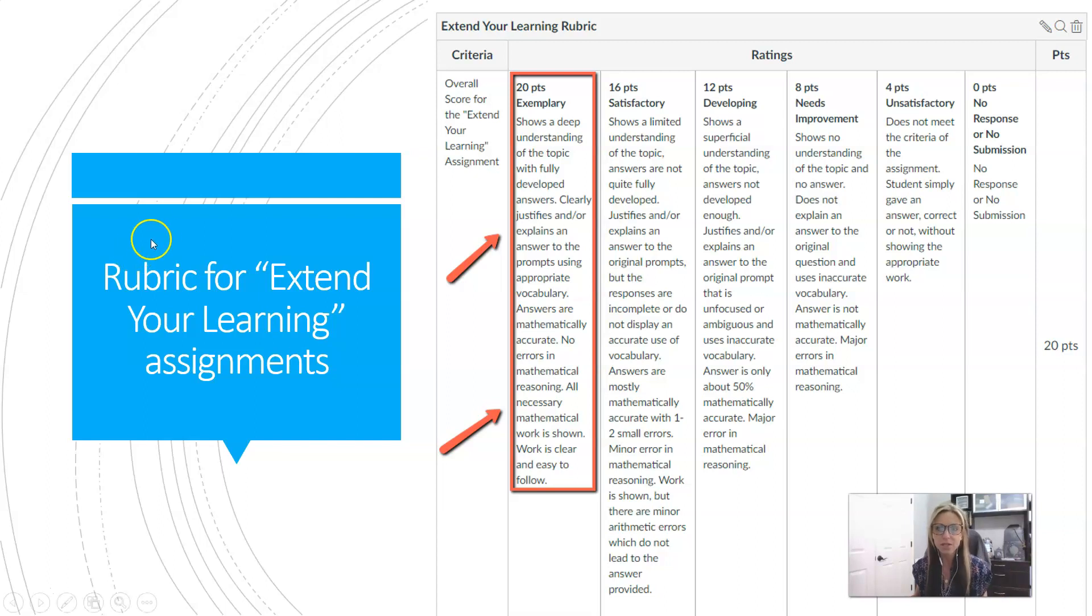Those are the guidelines to earn 20 out of 20 on your assignments, and you can find this rubric in Canvas. It's attached to each extend your learning assignment. Let's dig a little deeper in those two criteria that fall under the exemplary column.